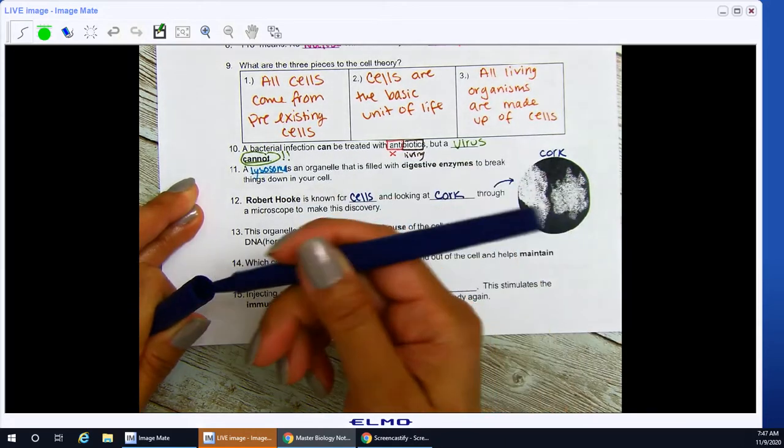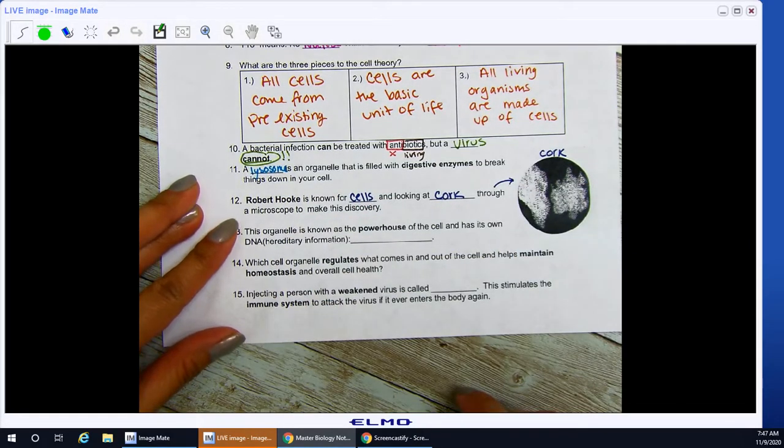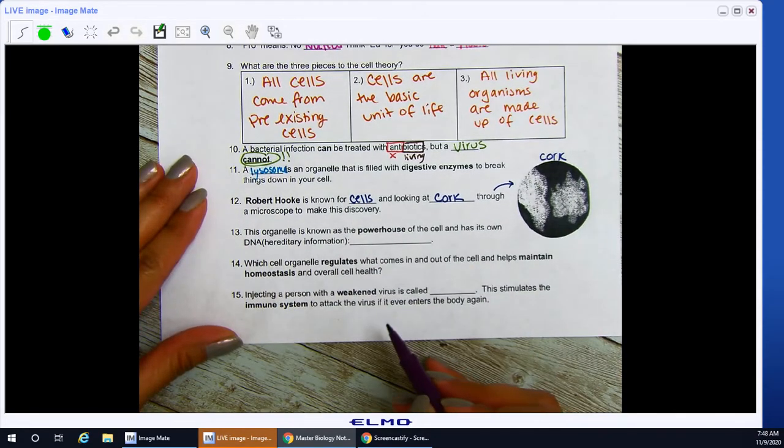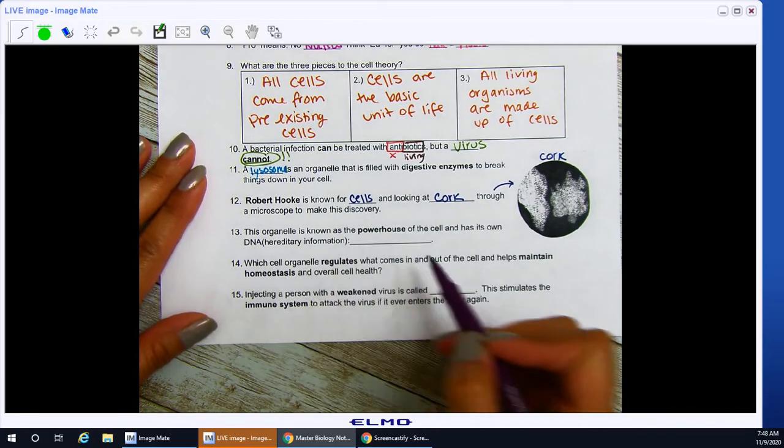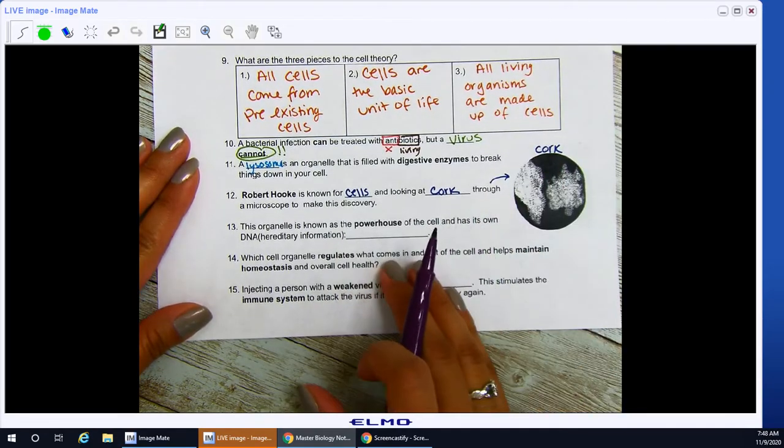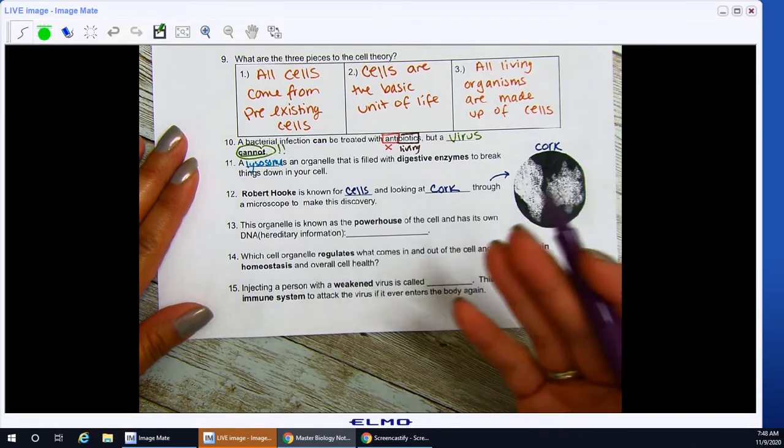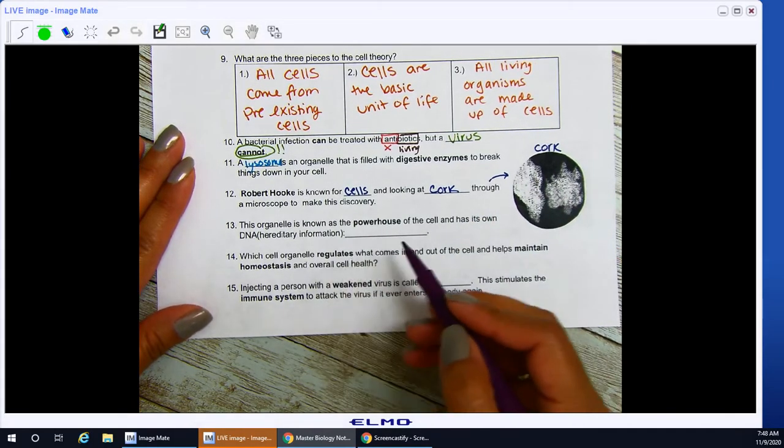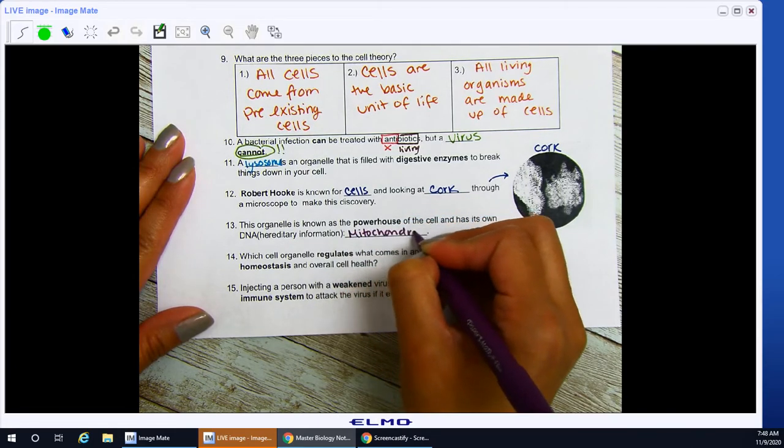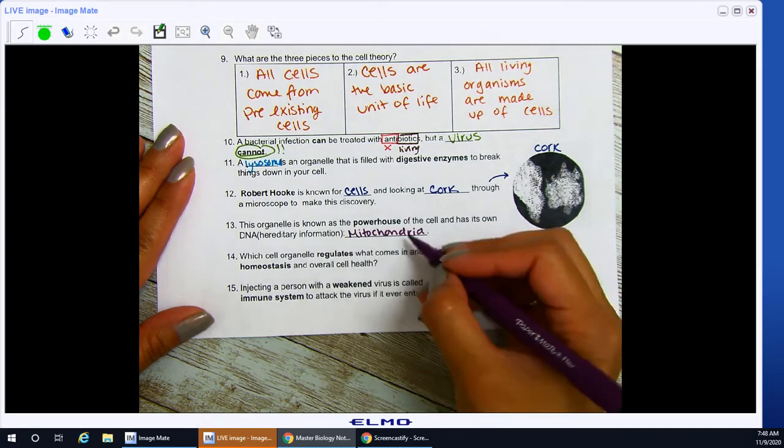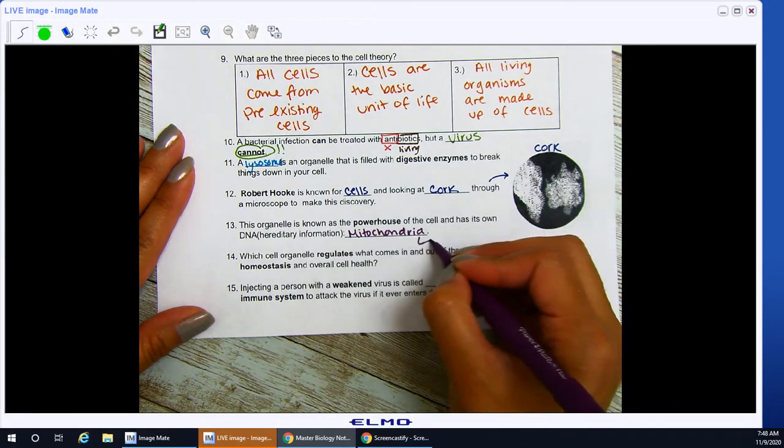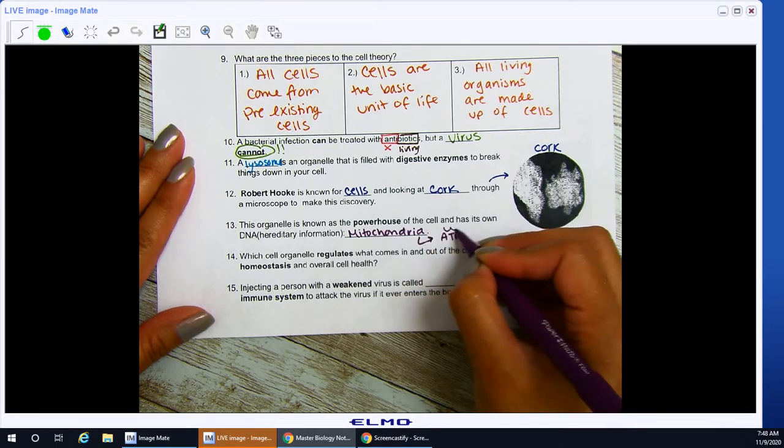Number 13. This organelle is known as the powerhouse of my cell, and it has its own DNA. Okay. In the end puzzle, we had seen from endosymbiotic theory, okay, that mitochondria are believed to have been picked up by our cells. So, they had been, or they are previously thought to have existed on their own. Okay, so powerhouse of the cell, this is the mighty mitochondria. Okay, this is where all of your cellular respiration occurs, where you make energy for your cells, and that is in the usable form of ATP.